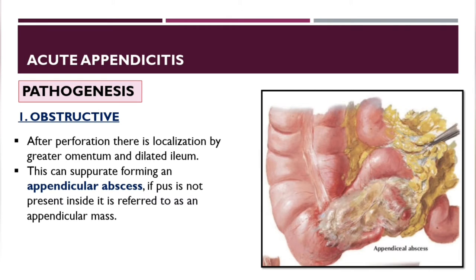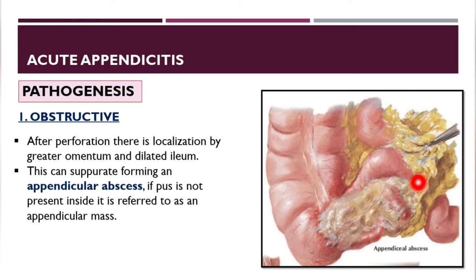After perforation, there is localization by the greater omentum and dilated ileum, which can suppurate, forming an appendicular abscess. If pus is present inside, it is referred to as an appendicular abscess; if there is no pus, it is called an appendicular mass.